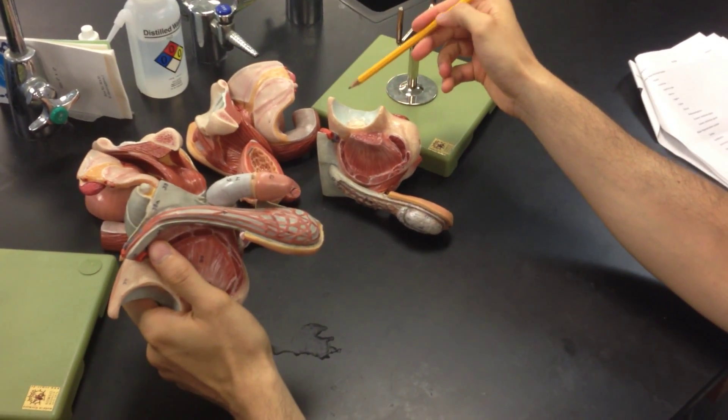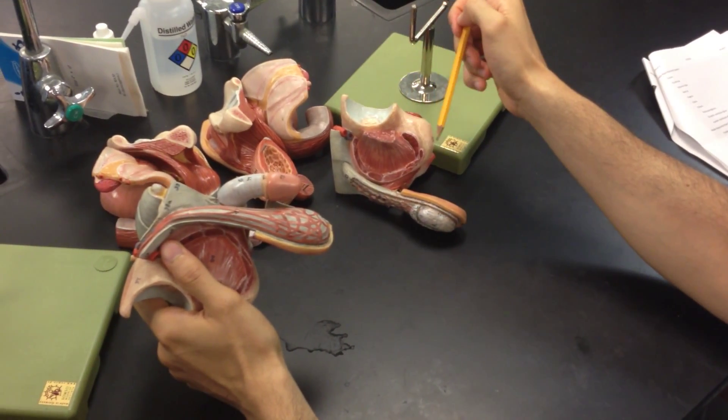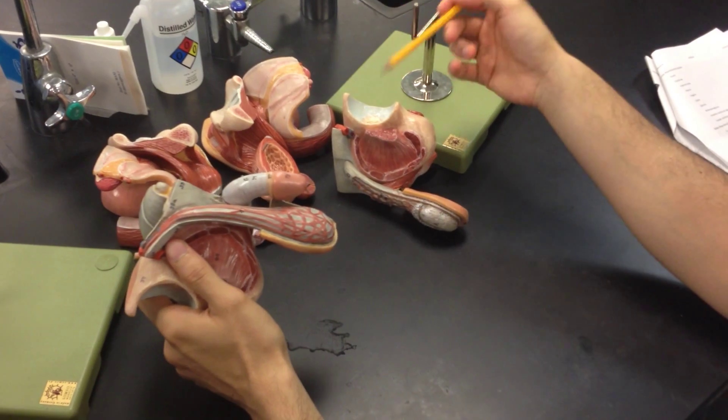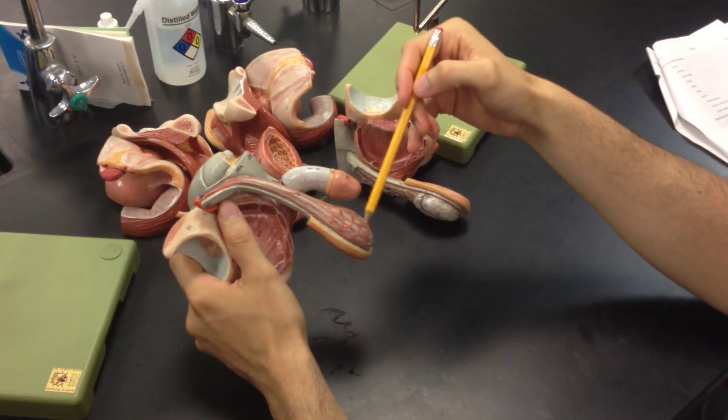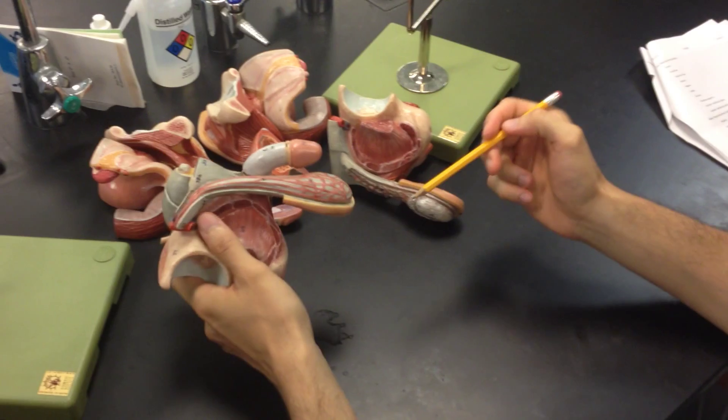This shows the order the egg would actually come out and eventually be fertilized to become a baby. This one's going to show the way the sperm would come out. All right, so first place we're starting—